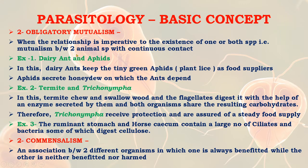Obligatory mutualism is when the relationship is imperative to the existence of one or both species — mutualism between two animal species with continuous contact. An example is dairy ant and aphids (plant lice). The dairy ant keeps the tiny aphids as food suppliers, and the aphids secrete honeydew on which the ants depend. This relationship is obligatory mutualism.